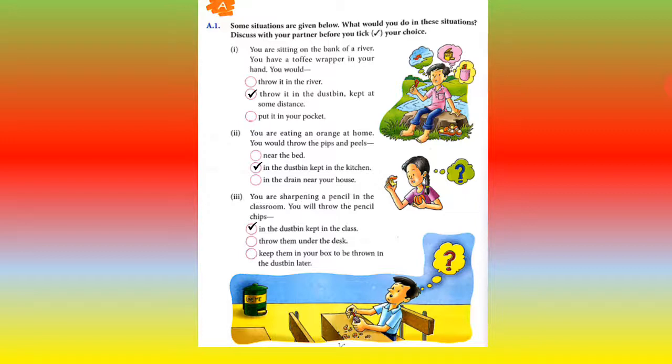You are eating an orange at home. You would throw the pips and peels. The pips are the seeds inside. What will you do? Where will you throw it? Near the bed - many children do this, but it is wrong. In the dust bin kept in the kitchen - in the kitchen, we will put it in the dust bin. Or in the drain near your house. What you think is best, what will you do now? Okay? Or what do you do when it happens?